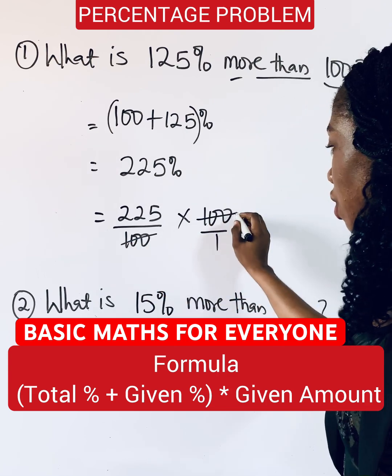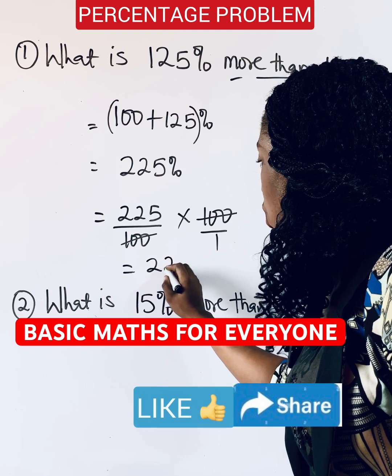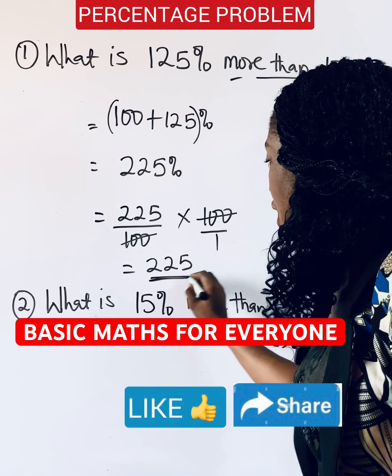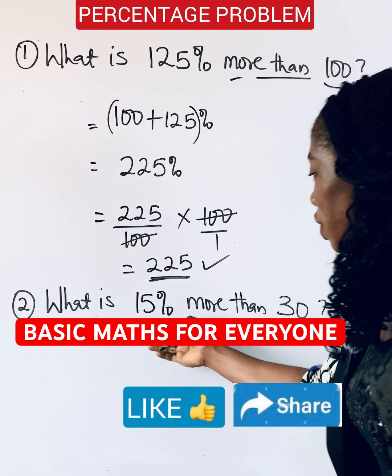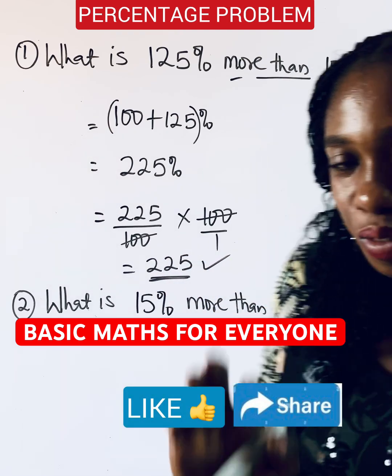And when you multiply, this cancels out and you are going to have 225 — and that is your answer. What do you think about this? Let us know.